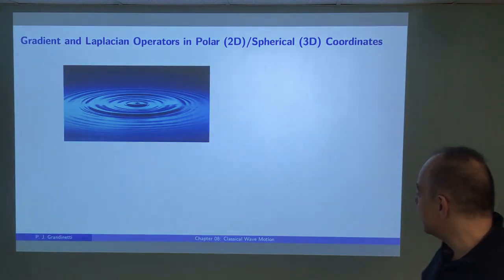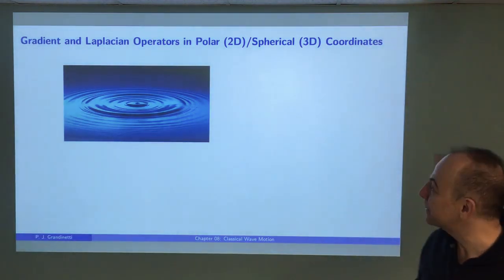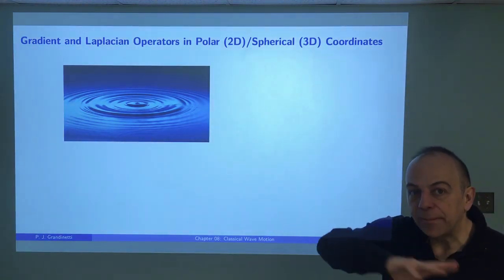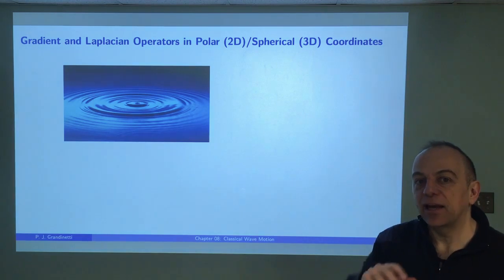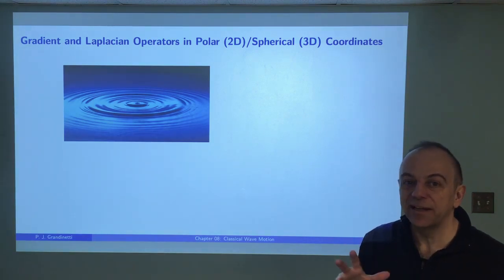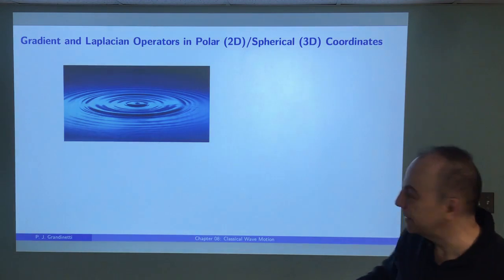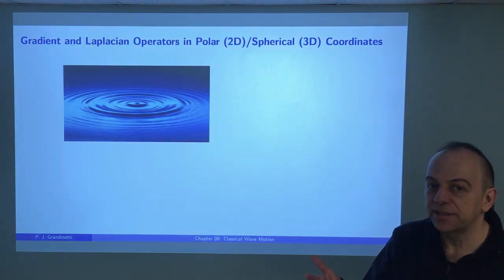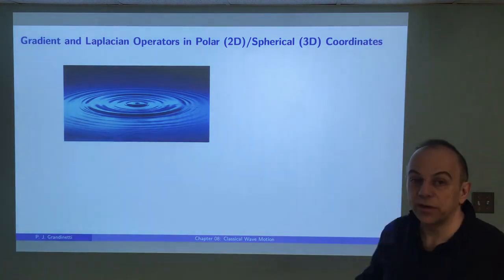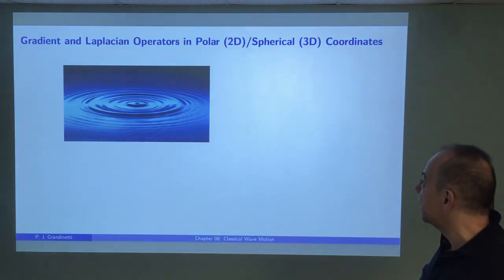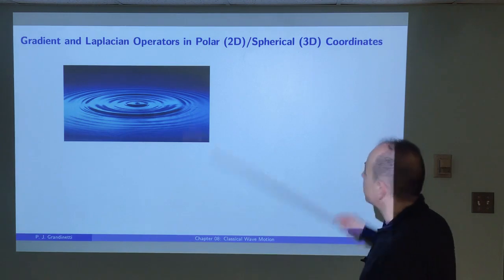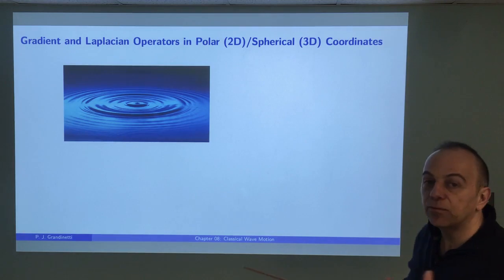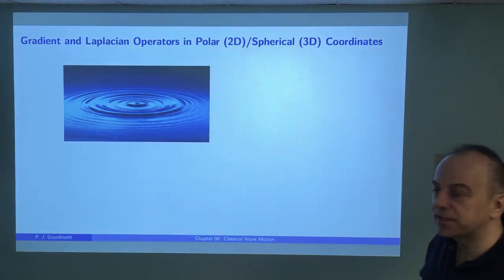Welcome back to Chem 4300. In this video, we're going to continue Chapter 8 on classical wave motion. We're going to turn our attention to waves where the symmetry is such that Cartesian coordinates are not the most appropriate system — instead, polar coordinates in 2D or spherical coordinates in 3D would be more appropriate. So I'm going to look at the conversion from a Cartesian to spherical basis, and the polar coordinate conversion will be just a special case of that.